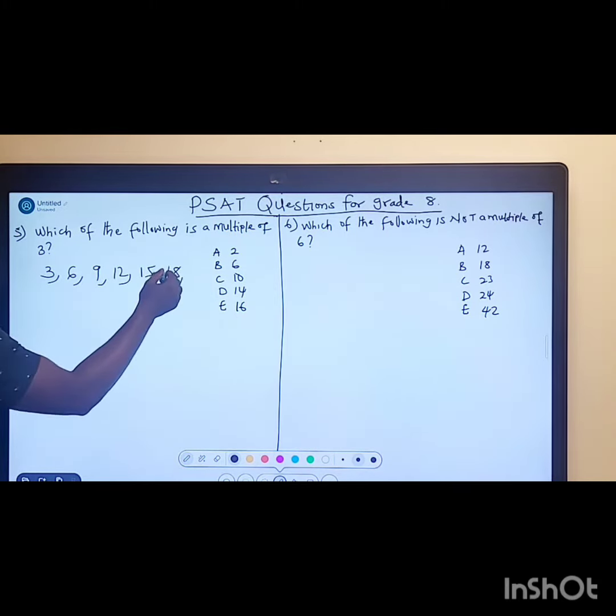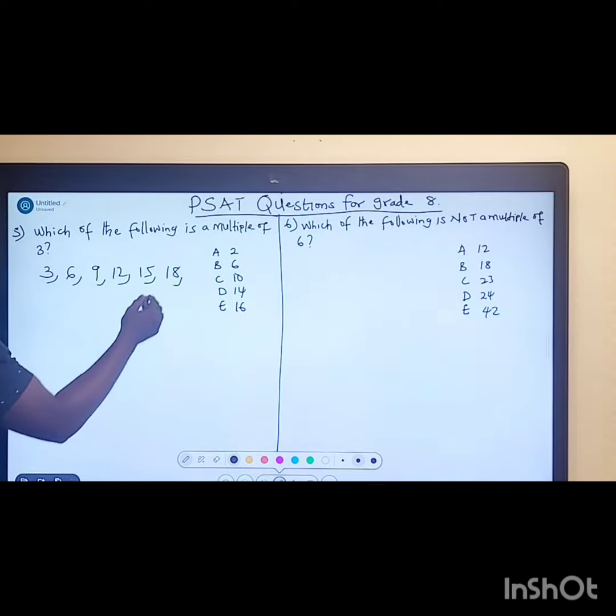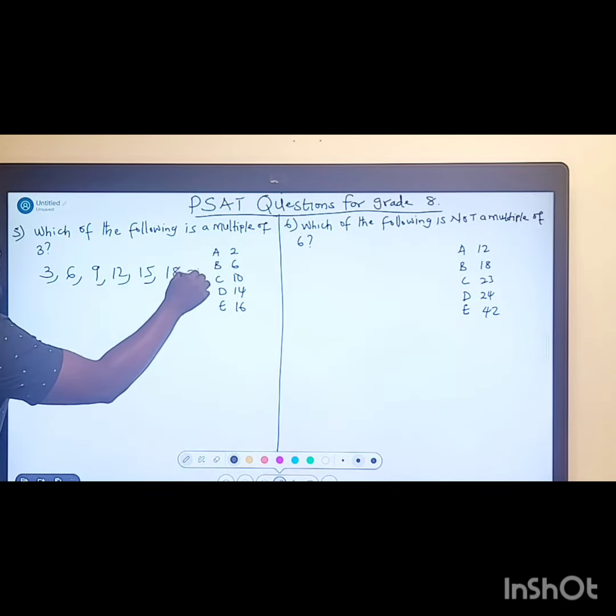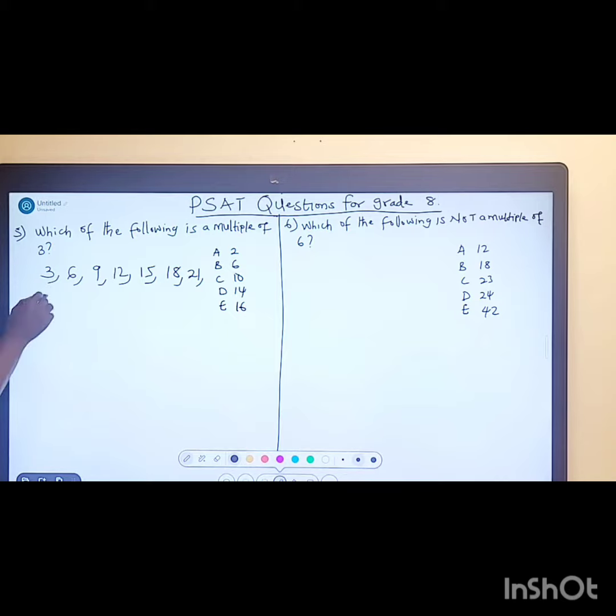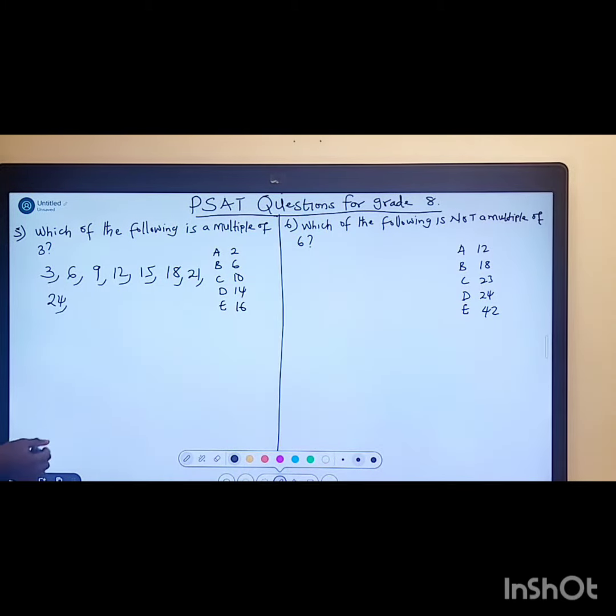You can also add three to this. When you add three to eighteen, that will give us twenty-one. When you add three to twenty-one, that will give us twenty-four. You can also say three times nine, you know, twenty-seven.